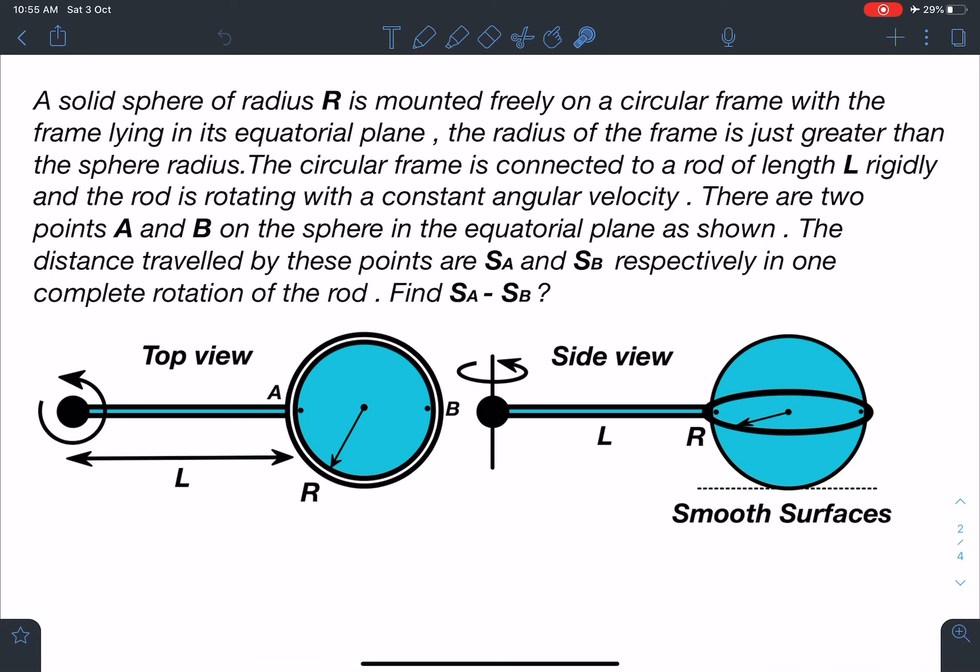The frame lies in the sphere's equatorial plane. The radius of the frame is just greater than the sphere radius. The circular frame is connected to a rod of length L rigidly.